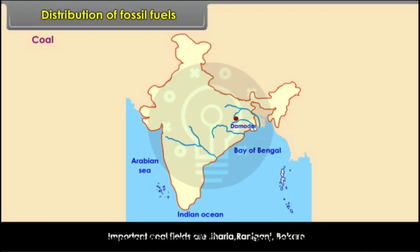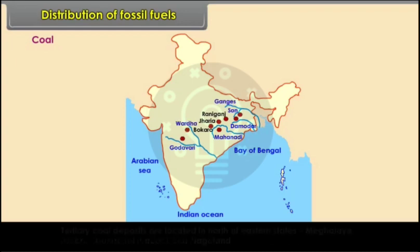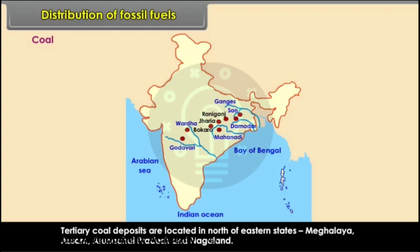Other coal fields in India include the Godavari, Mahanadi, Son and Wardha Valleys. Tertiary coal deposits are located in Northeastern states — Meghalaya, Assam, Arunachal Pradesh and Nagaland.